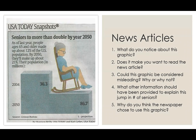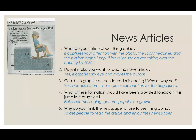In this lesson, we're going to go over a couple different graphs that have been found in the media, and we'll analyze them to see what story they're telling and whether or not they're misleading. We'll start with looking at news articles. This is from USA Today — I'm not sure what year — and the article says 'seniors to more than double by year 2050,' and there's this picture.